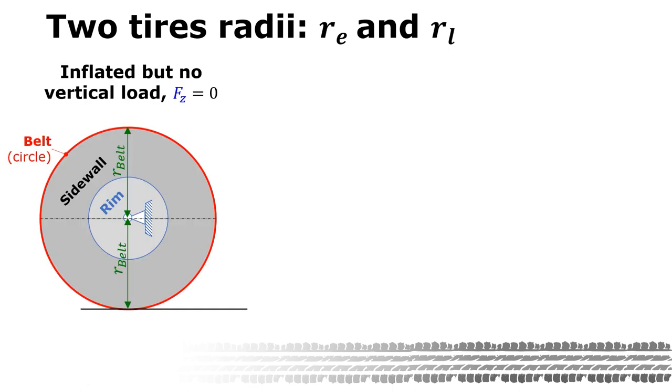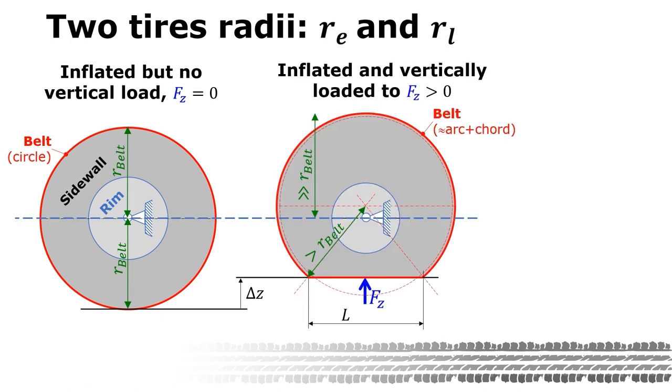First, regarding an inflated tire, but we have not yet applied the vertical load. Observe that the belt forms the perfect circle here. Then we apply the vertical load. Here it is done by keeping the rim center fixed, but lifting the ground with the length of delta z upwards. The lower part of the sidewall is compressed. The upper part is extended. And this can be understood as an external load on a pre-tension structure.